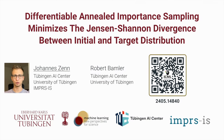Hello and welcome to this talk. My name is Johannes and I will be talking about our work 'Differentiable and Annealed Importance Sampling minimizes the Jensen-Shannon divergence between initial and target distribution.' This is joint work with Robert Bambler from University of Tübingen.